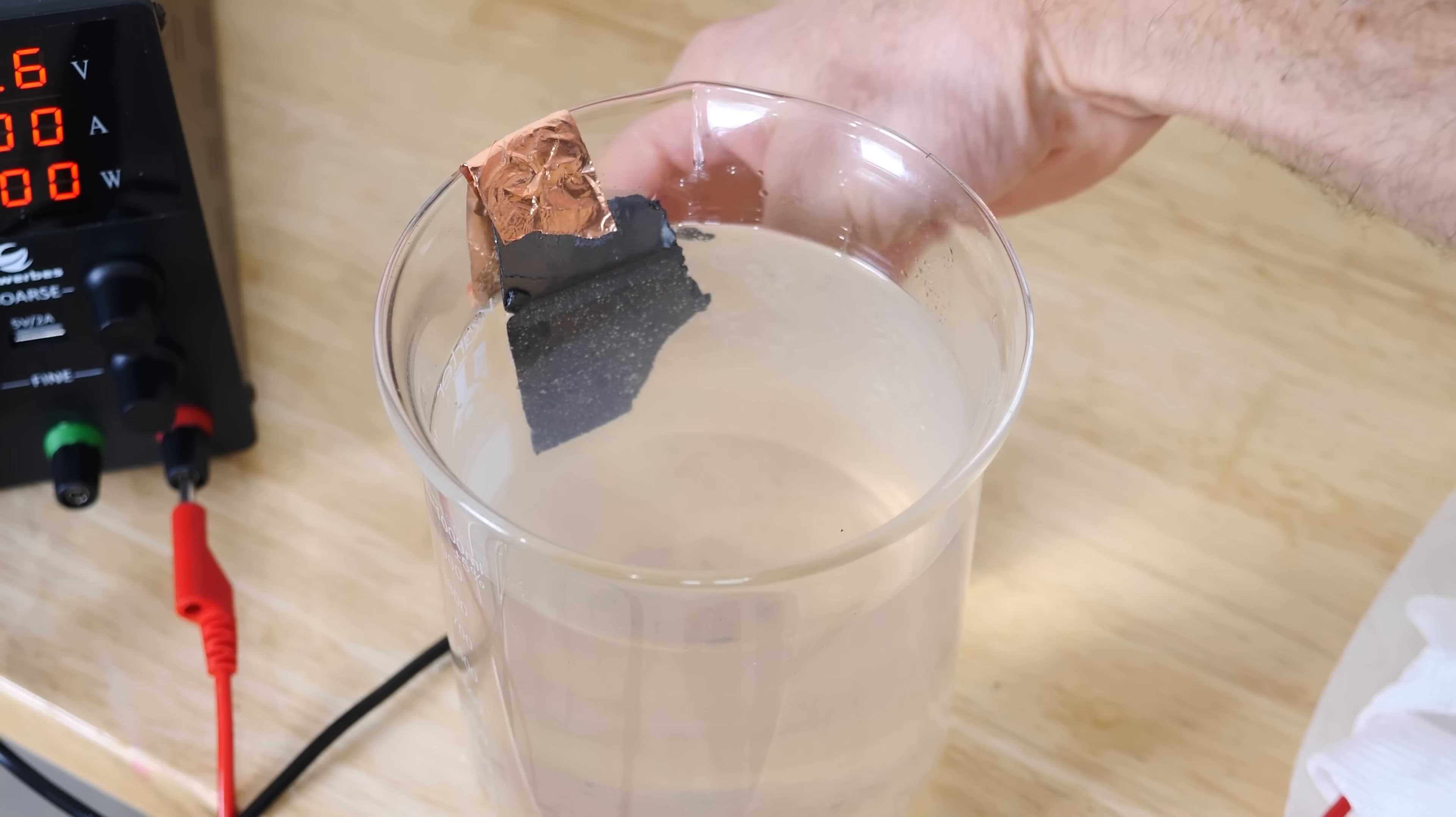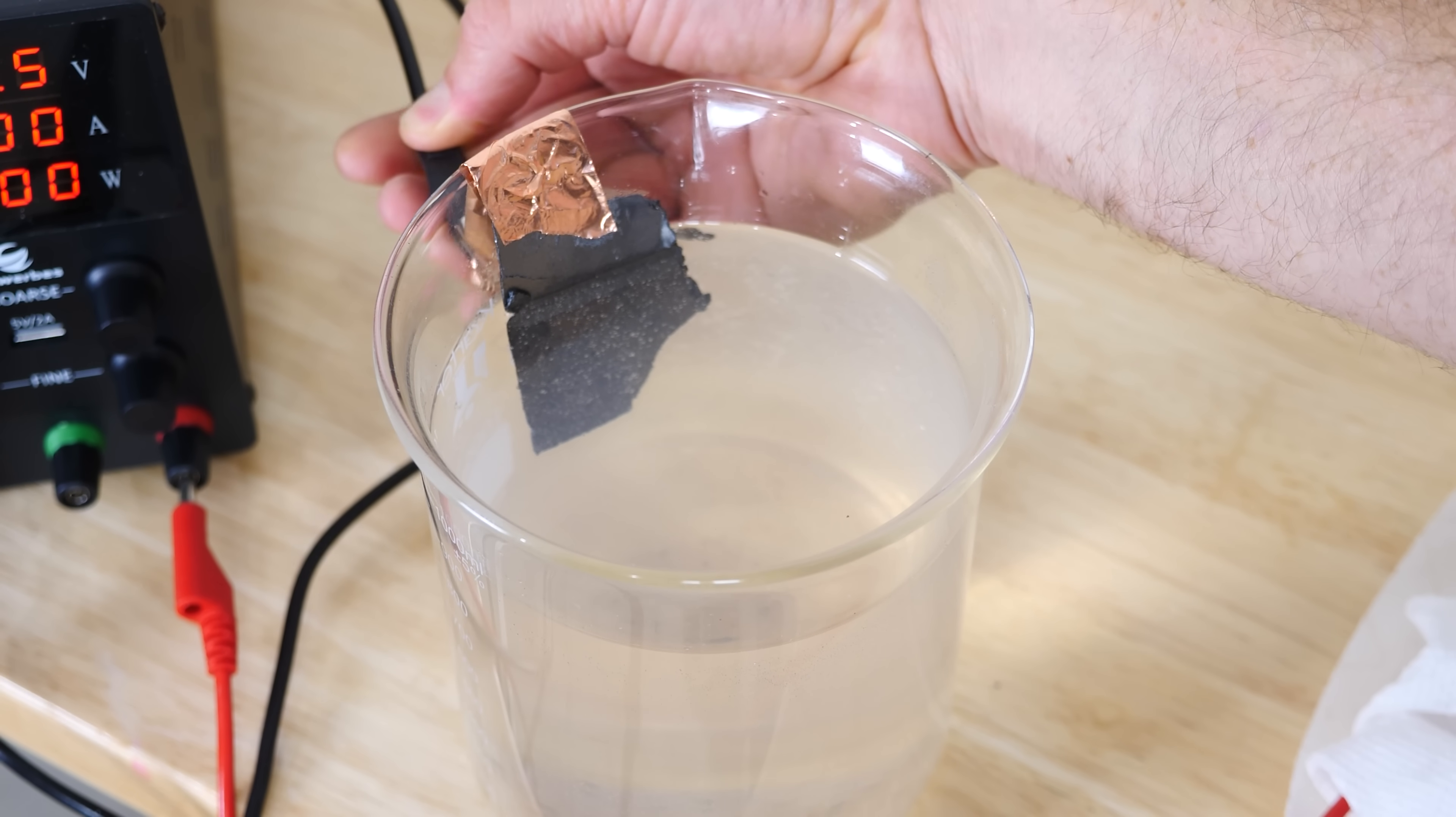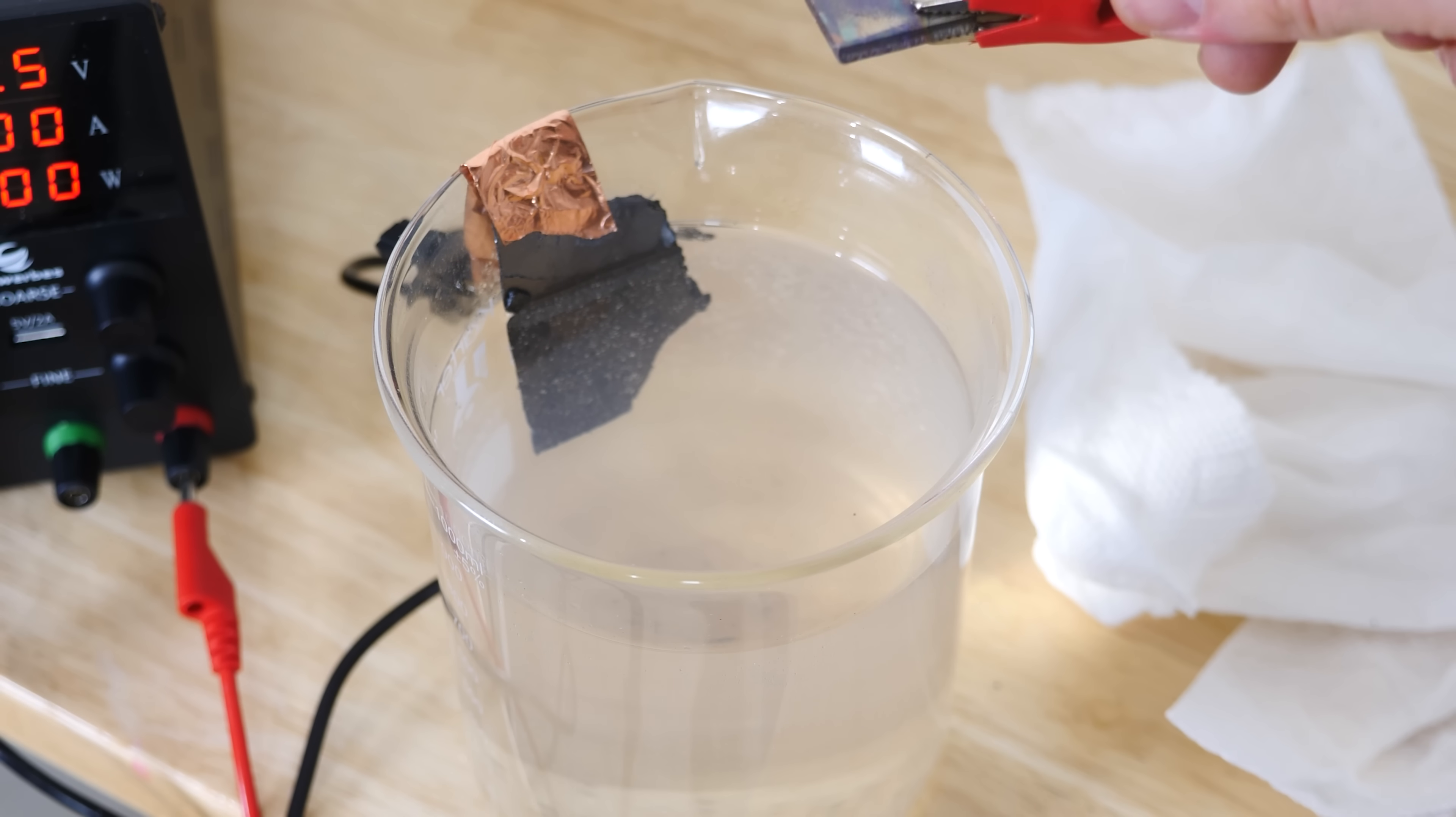Then I take my electrolyte solution, and I hook my negative electrode to this. Now this electrode can be made of almost anything. I just have it made out of graphite here. And then you want your positive electrode to be connected to your titanium.